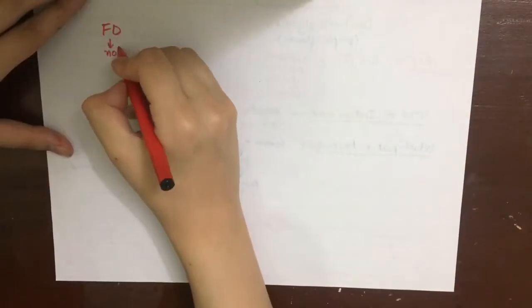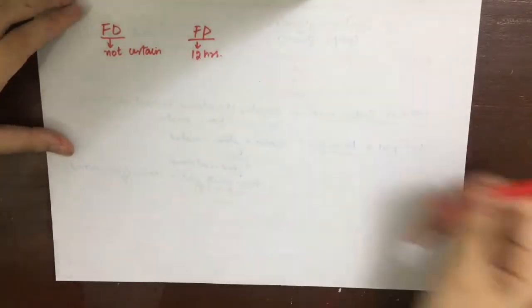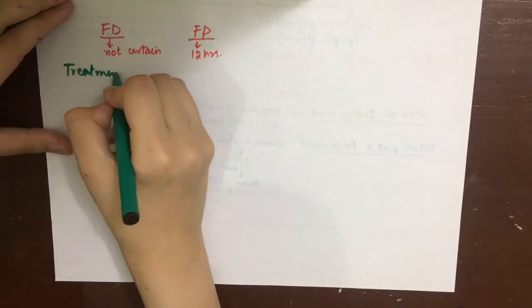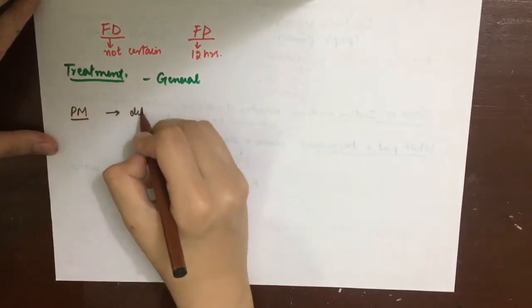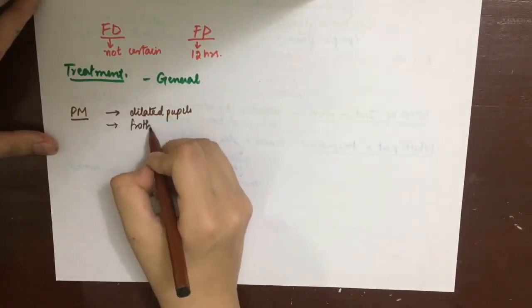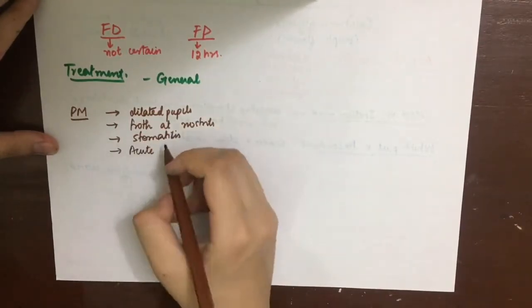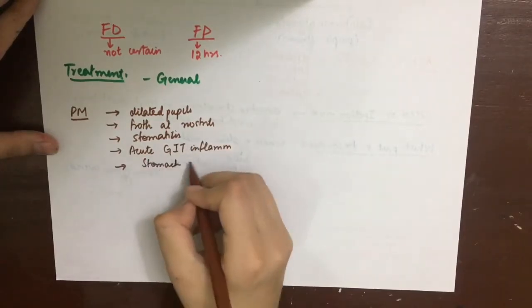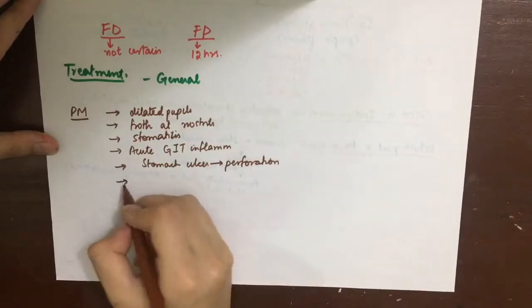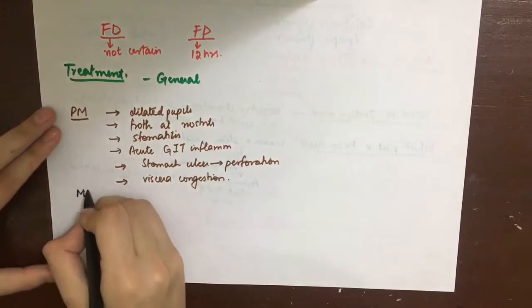The fatal dose is not certain and the fatal period is about 12 hours. Treatment is on general lines such as gastric lavage with warm water and demulcents. Post-mortem appearance shows dilated pupils, froth at the nostrils, stomatitis (inflammation of the mouth and lips), acute inflammation of the GI tract, stomach ulcers or even perforations, and congestion of the pelvic viscera.